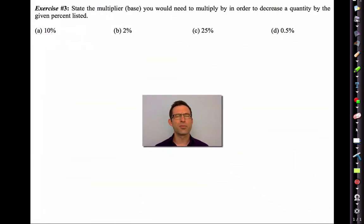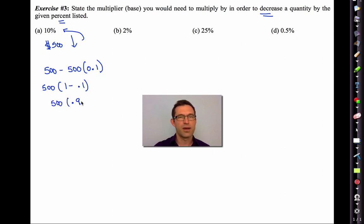Exercise three says state the multiplier, the base you would need to multiply by in order to decrease a quantity by the given percent listed. So let's take an example. Let's say we took $500 and we wanted to decrease it by 10%. What I would do is I'd take 500 and I'd subtract off 500 times 0.1, but that would be 500 times 1 minus 0.1, which would be 500 times 0.9. I'm going to put 0.90. So the correct answer is 0.90. In other words, we would have 90% remaining. You always multiply by the percent you have remaining, whether that's 105% when we're adding 5% or whether it's 90% when we're subtracting.